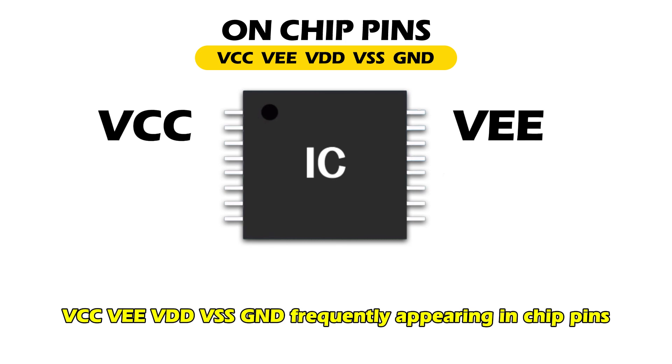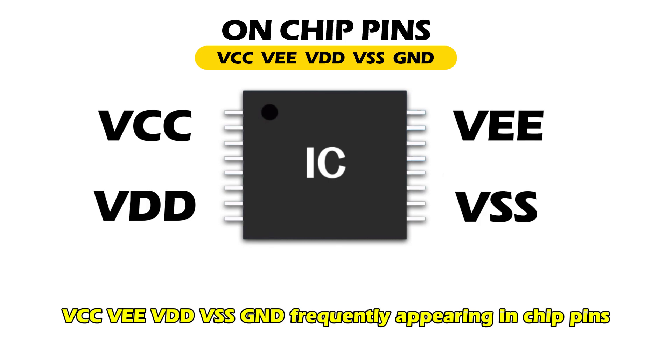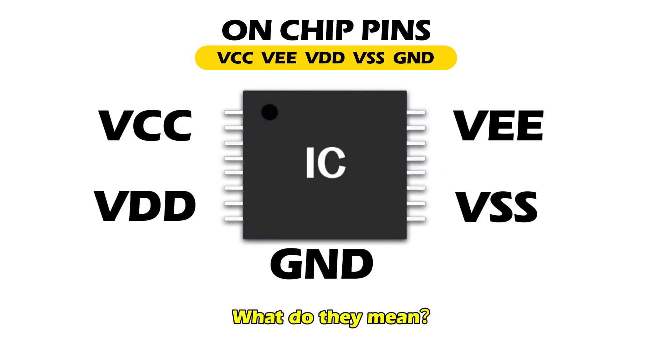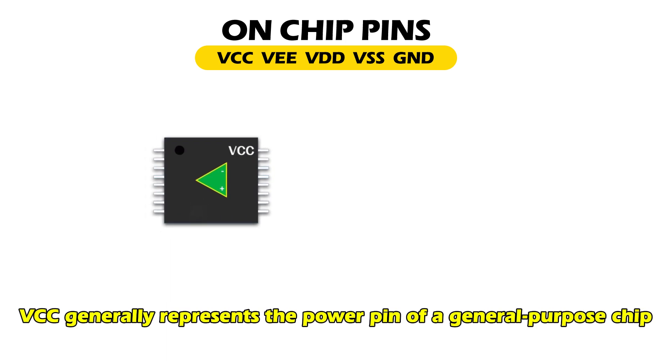VCC, DEE, VDD, VSS, GND — frequently appearing in chip pins. What do they mean?